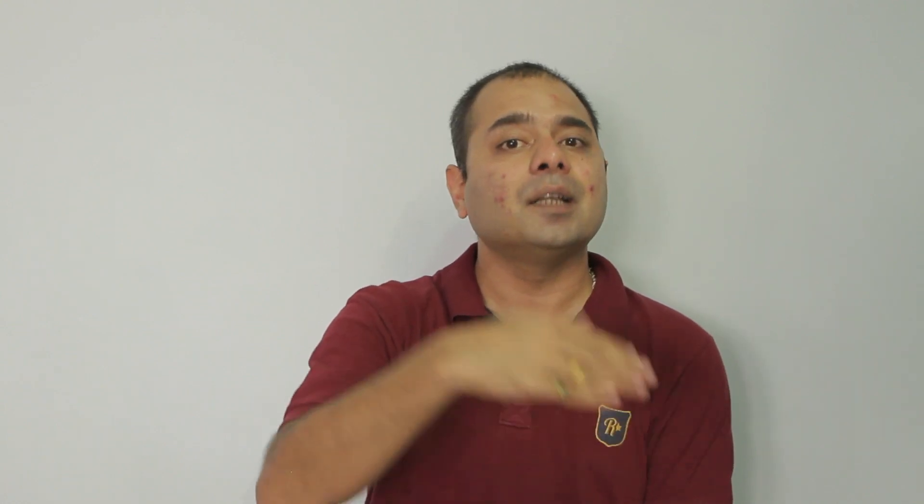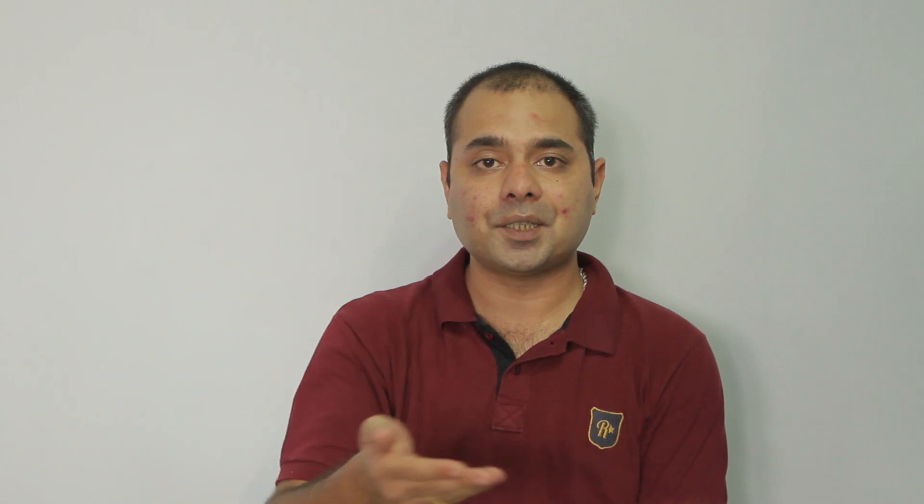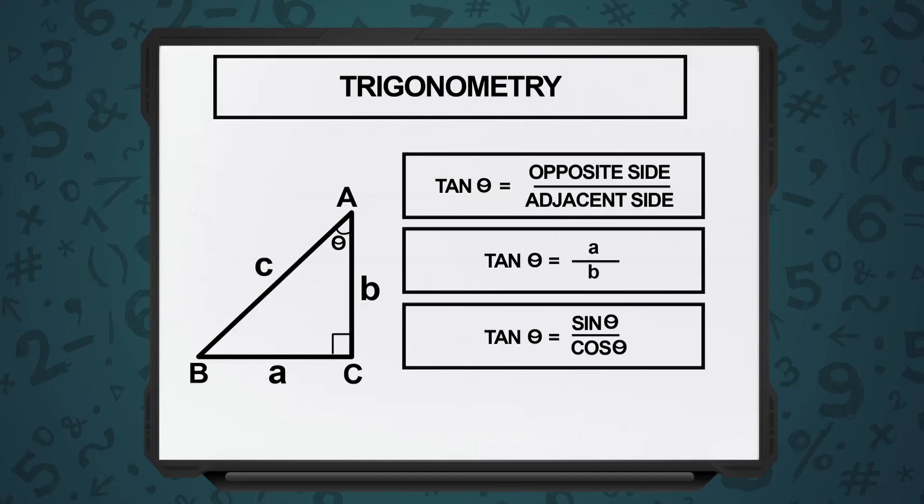In simple terms, you can say sin theta equals opposite side upon hypotenuse, cos theta adjacent side upon hypotenuse, tan theta is equal to sin theta upon cos theta.